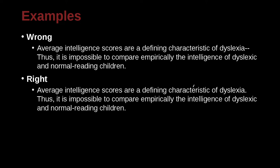'Average intelligence scores are a defining characteristic of dyslexia.' Here we end it with a period. In the incorrect version, two hyphens make a dash, followed by: 'Thus, it is impossible to compare empirically the intelligence of dyslexic and normal reading children.' A dash does not have a capital letter after it — rather, a dash explains something in more detail or changes the tone. Since these are two separate sentences, it's best to just use a period.